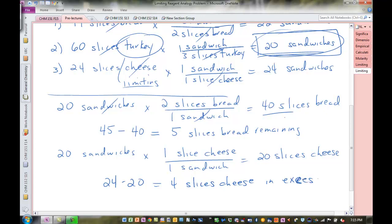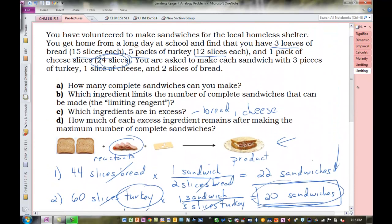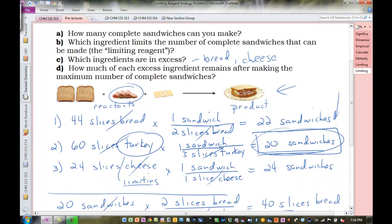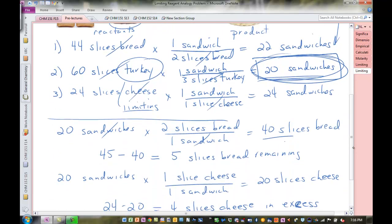Four slices of cheese in excess. Or four slices of cheese remain. I kind of like analogies at times. Sometimes, if it's a good analogy, they can really help you make connections in problems. I think this is a pretty good one. We're familiar with making sandwiches, and this comparison between ingredients as reactants and the product that we want to make, and realizing that one of our ingredients is going to run out and limit how many sandwiches we can make. And therefore, the other two ingredients in this case will be left over, and we can figure out how much excess of each one we have. All right, I hope this helps. Lots of limiting reagent videos posted. Please let me know if you have any questions. Have a great day. Take care.